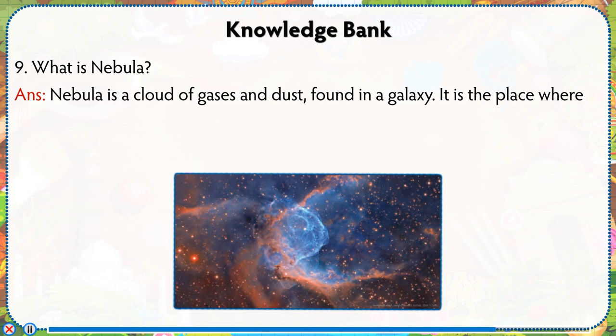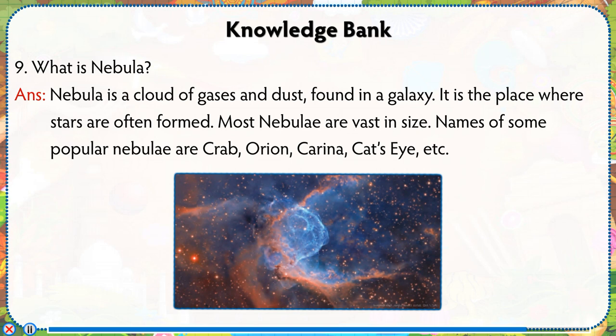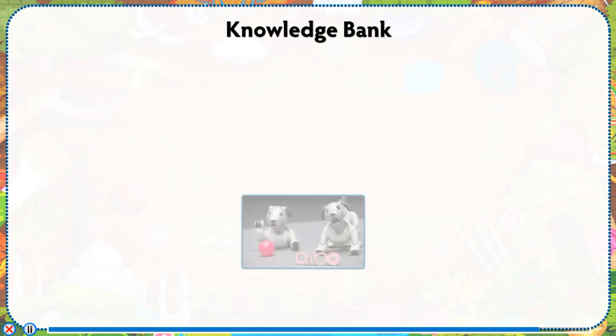What is a nebula? A nebula is a cloud of gases and dust found in a galaxy. It is the place where stars are often formed. Most nebulae are vast in size. Names of some popular nebulae are Crab, Orion, Serena, Cat's Eye, etc.